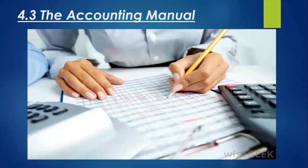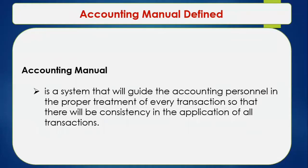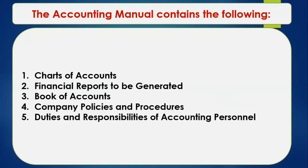The next key area I want to emphasize today would be the accounting manual. Remember, part of the accounting system is the accounting manual. When we say accounting manual, this is a system that will guide the accounting personnel in the proper treatment of every transaction so that there will be consistency in the application of all transactions. The accounting manual contains the following: first, charts of accounts; second, financial reports to be generated; third, books of accounts; fourth, company policies and procedures; and finally, duties and responsibilities of accounting personnel.